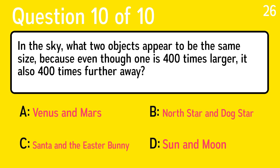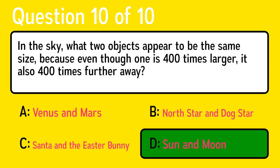And the last question is, in the sky, what two objects appear to be the same size? Because even though one is 400 times larger, it is also 400 times further away. The correct answer is D, sun and moon.